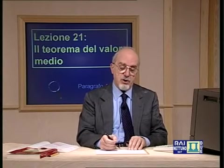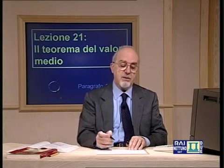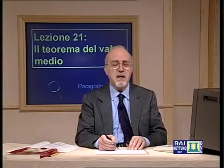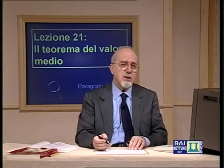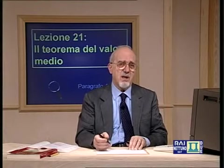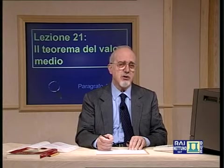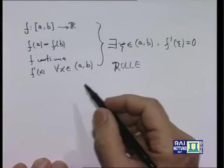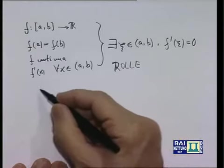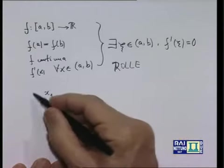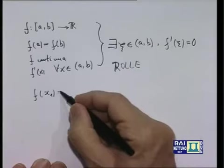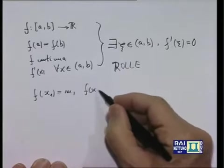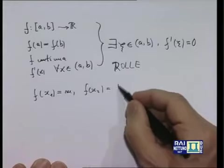Vediamo dunque come si possa giungere alla tesi di questo teorema. La funzione è continua nell'intervallo limitato e chiuso [a, b]. Il teorema di Weierstrass, che abbiamo dimostrato in una delle lezioni precedenti, ci assicura che questa funzione è dotata di massimo e di minimo: esiste un punto x₁ in cui f(x₁) raggiunge il proprio valore minimo m, e c'è un punto x₂ in cui la funzione raggiunge il proprio valore massimo.